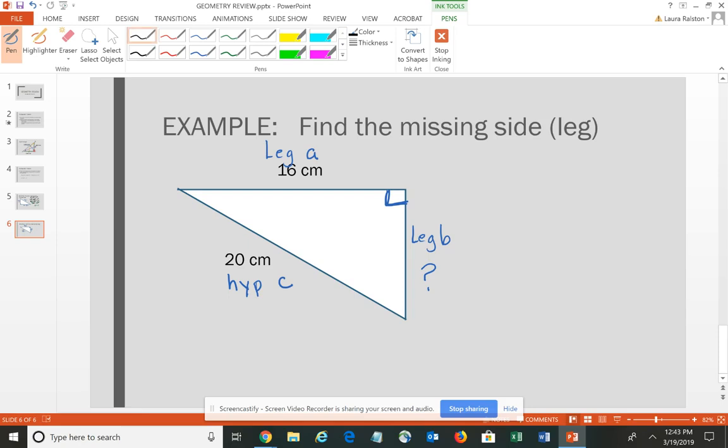Using the Pythagorean Theorem to find the missing side – when you have a right triangle, you should always use this theorem. If you don't have a right triangle, we'll look at other options later in the course. We plug and chug: 16² + b² = 20². Doing the math, 16 squared is 256, so 256 + b² = 400.